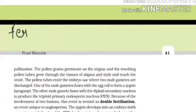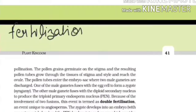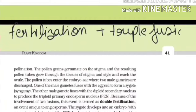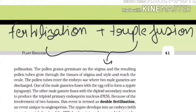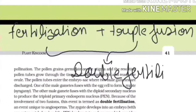When fertilization occurs, the zygote is formed, and triple fusion forms the endosperm — both occur inside the flower, so they show double fertilization. These are the unique processes seen in angiospermic plants.